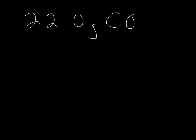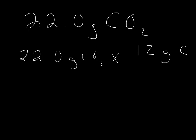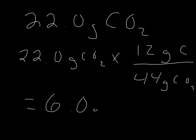When the 11.5 grams of ethanol burns, it turns out that it produces 22.0 grams of carbon dioxide. This is the carbon dioxide produced from burning the ethanol, and it contains the carbon that was originally in the ethanol. So if we take the 22 grams of carbon dioxide and multiply it by 12 grams of carbon per 44 grams of carbon dioxide, we get 6 grams of carbon in the original ethanol sample.